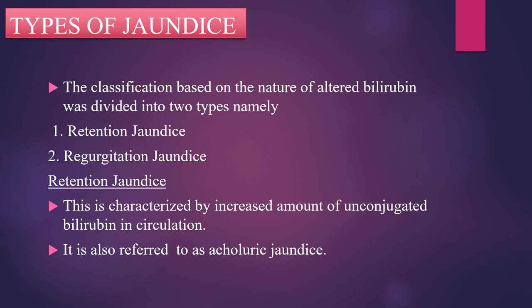Retention jaundice is characterized by an increased amount of unconjugated bilirubin in the circulation. This kind of jaundice is also referred to as acholeuric jaundice.